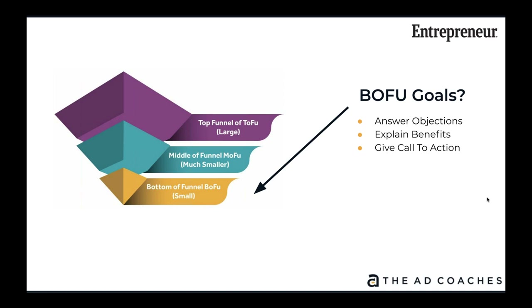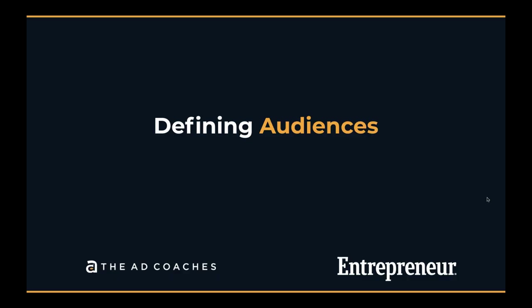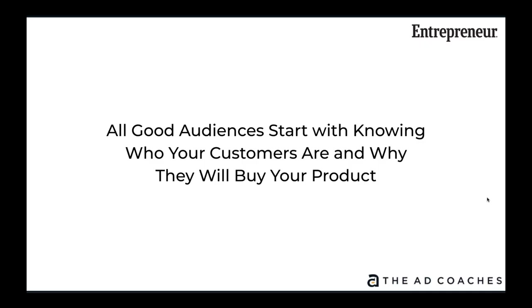Bottom of funnel — these are small audiences of people who have been through the middle of funnel or nurturing sequence for a time. At this stage, we need ads that answer objections and move them towards the sale. We need a clear explanation of benefits and a clear call to action. If you're running an e-commerce store on Shopify or WooCommerce, drive them to the product page. If you're a service business generating appointments, drive them to the appointment page. For lead generation, give away a tool or download — be very clear and specific about your calls to action.